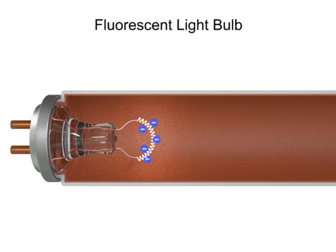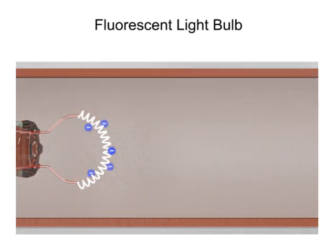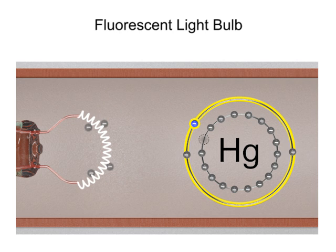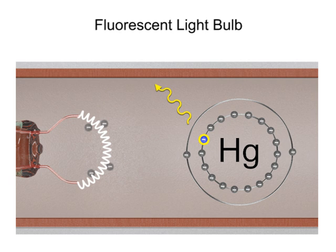An AC voltage pulse supplied by a starter pushes the electrons from one end of the tube to the other. If one of the free electrons collides with an electron of the mercury vapor, the electron is bumped from a lower to a higher energy level. The electron quickly returns to its lower energy state and releases an ultraviolet photon.